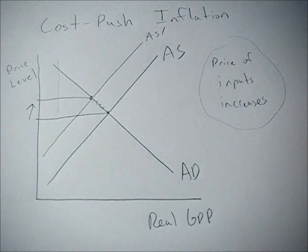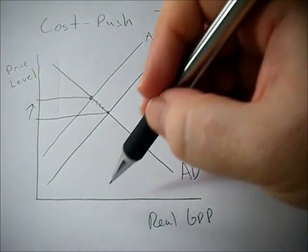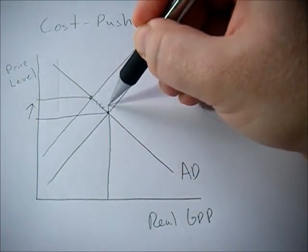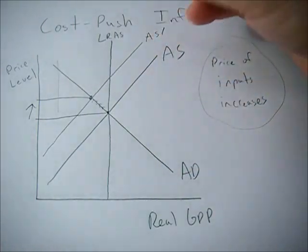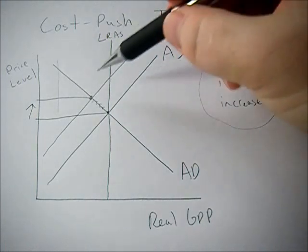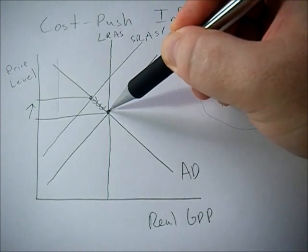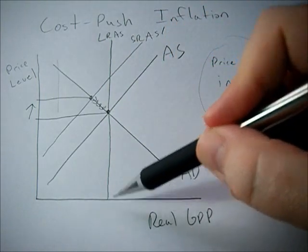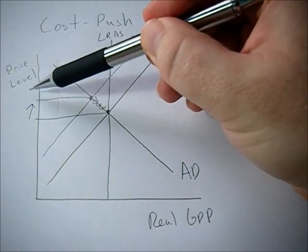If we also have a long run aggregate supply curve — this is short run — not every class will go over this, but if your instructor or textbook covers it, it's good to know. In the long run, we will return to this equilibrium real GDP level.